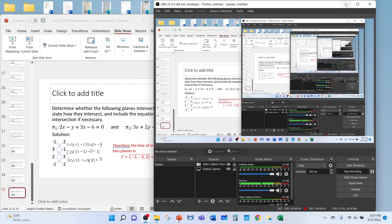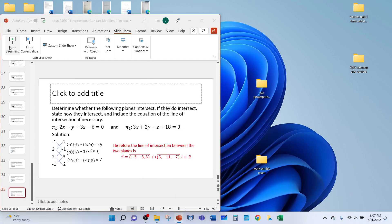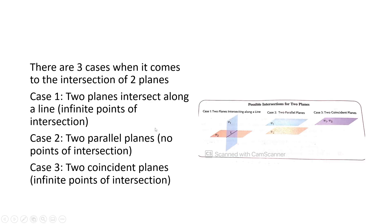In this video, we're going to talk about the intersection of two planes. There are three cases when it comes to the intersection of two planes. In case one, two planes will intersect along a line — infinite points of intersection. This happens any time two planes are not parallel.